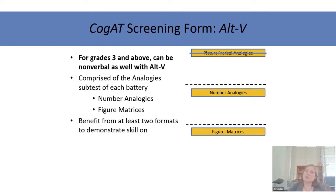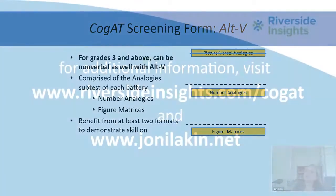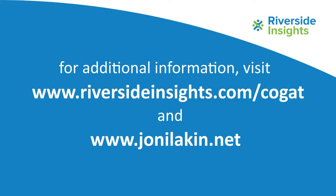For grades three and above, if you're interested in a fully nonverbal screener, you can use the Alt-B approach, which drops the verbal analogies. At ages nine and above it's very difficult to measure verbal reasoning without using words, so the picture-based analogies can't continue, but dropping that subtest leaves two other subtests that are fully nonverbal, giving you a composite score estimate. For most students, though, you'll want to use the complete screener with all three subtests.